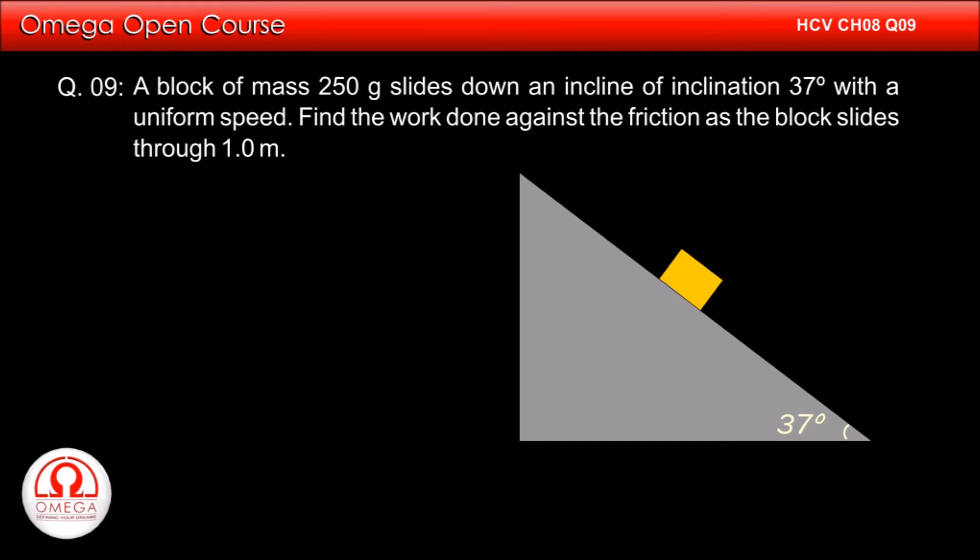A block of mass 250 grams slides down an incline of inclination 37 degrees with uniform speed. Find the work done against friction as the block slides through 1 meter.